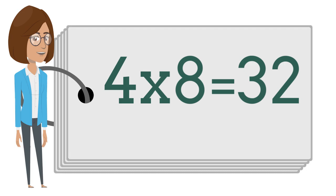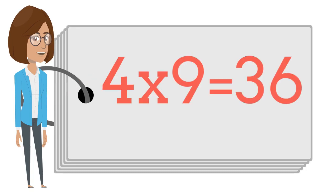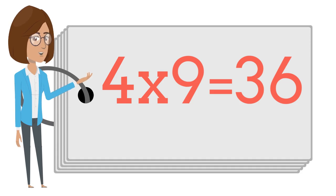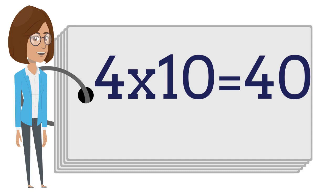4 times 8 is 32. 4 times 8 is 32. 4 times 10 is 40. 4 times 10 is 40.